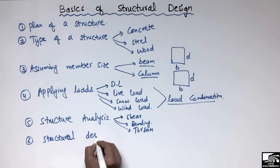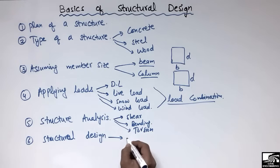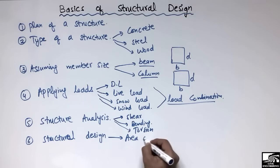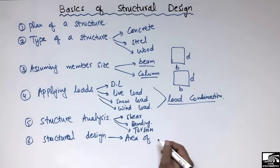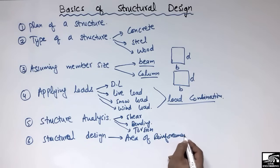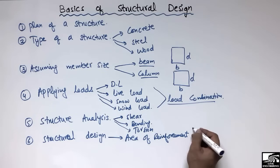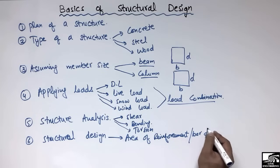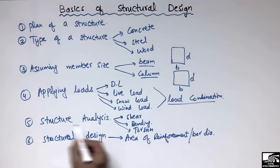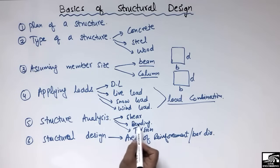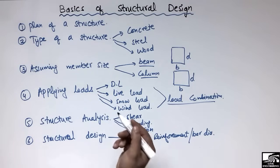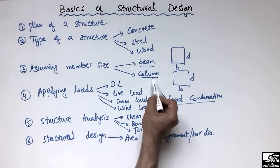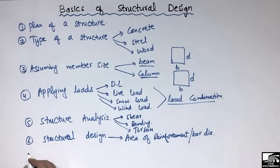The sixth step is structural design. This step includes determining how much area of reinforcement is required to resist various kinds of stresses, and which type and diameter of bar to provide. This covers the design of structural members — the beam, column, slab, and footing.